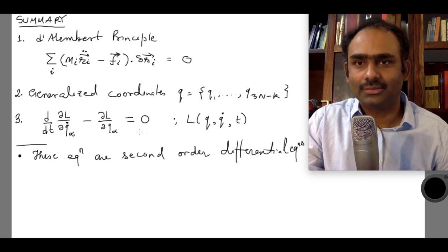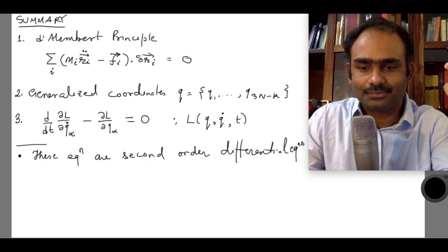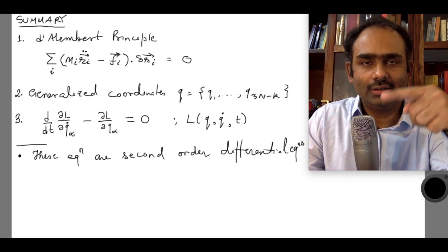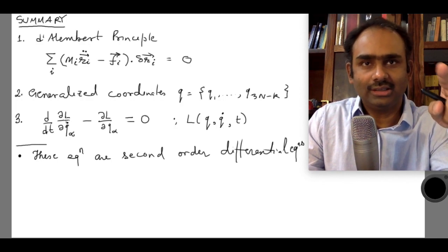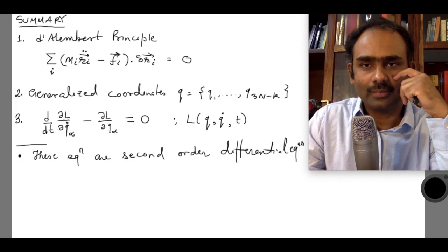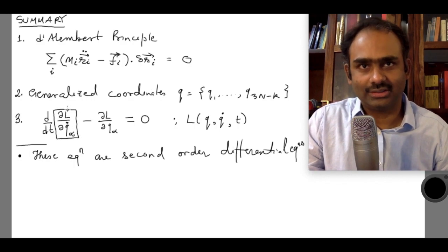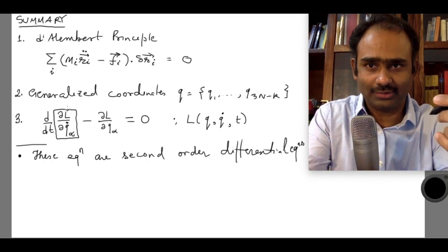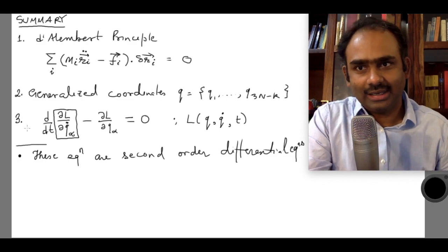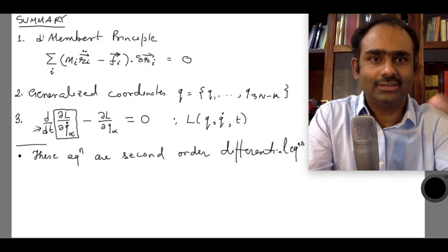Why are they second order? The Lagrangian we wrote down last time — the most general form of the kinetic energy function T — has terms T0, T1, and T2, where T2 is quadratic in the generalized velocities. So your Lagrangian, which is T minus U, will have quadratic terms. When you take a partial derivative with respect to a generalized velocity, you are left with a function linear in the generalized velocity. Then when you take the time derivative, you generate the second order time derivative of q — that is why these equations are second order.